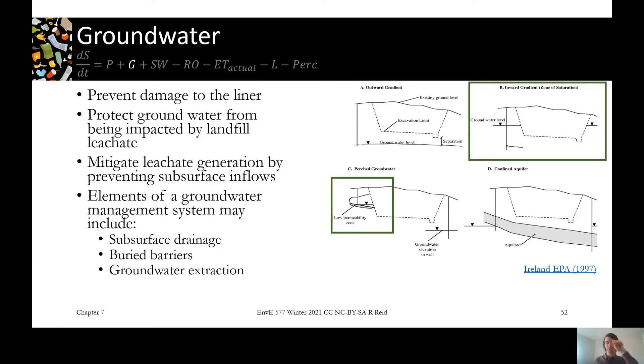You might have little perched layers of groundwater that are above just parts of your landfill rather than the whole groundwater table being above it. If you're really lucky you might have an aquitard between you and the aquifer below, so you can manage with your own liner system as well as the natural environment has its own liner system. So all of these will have different things you'll want to pay attention to.